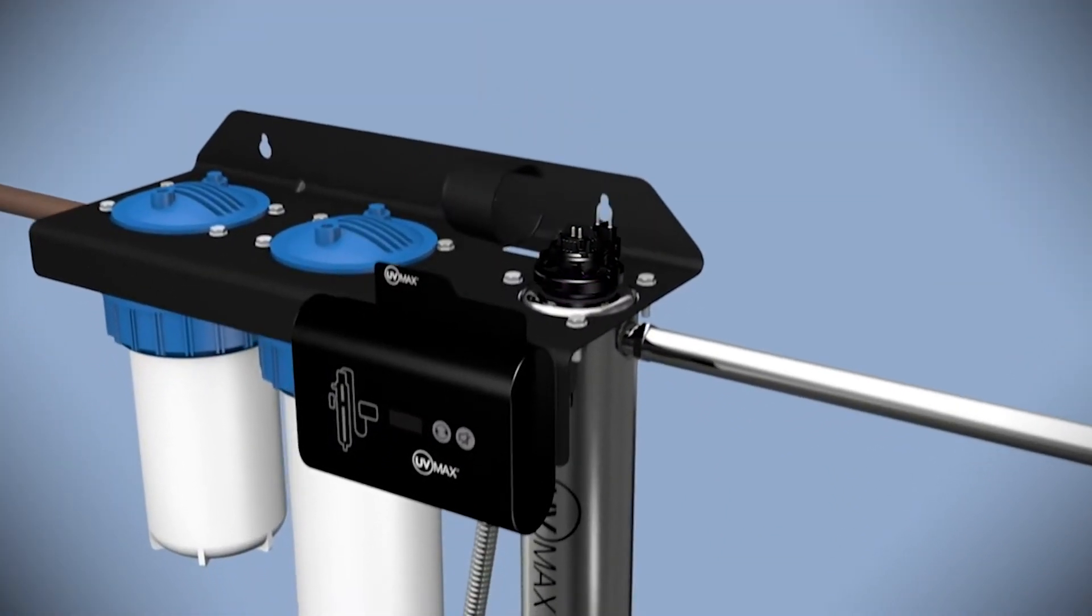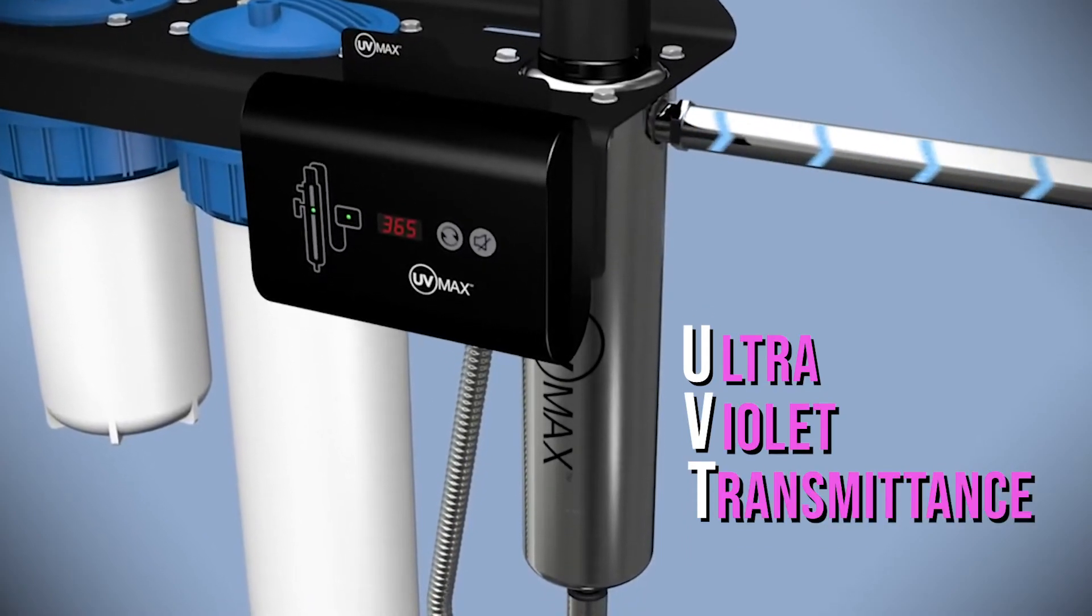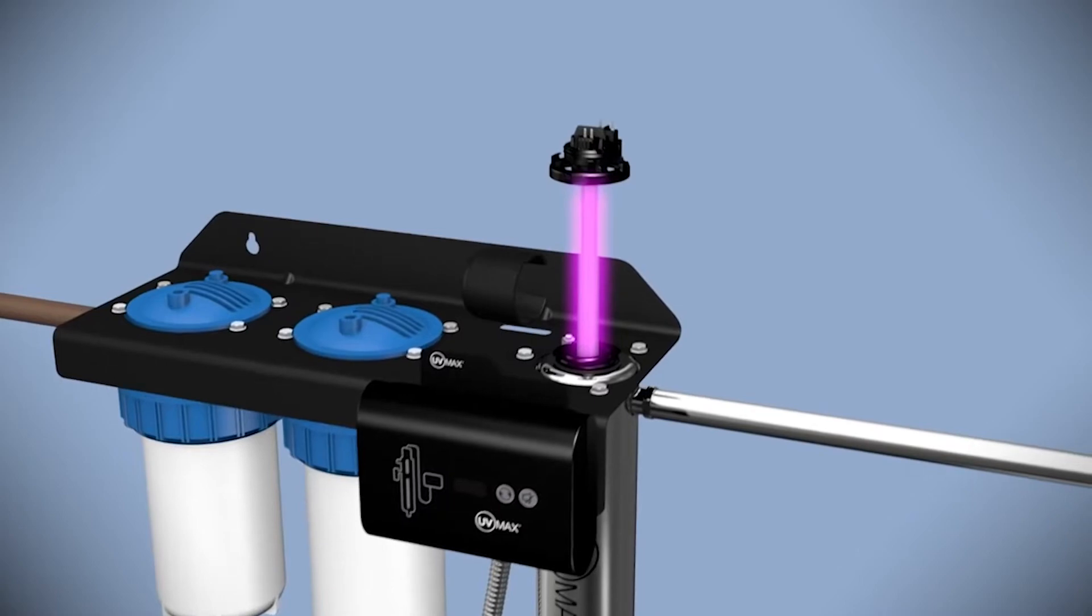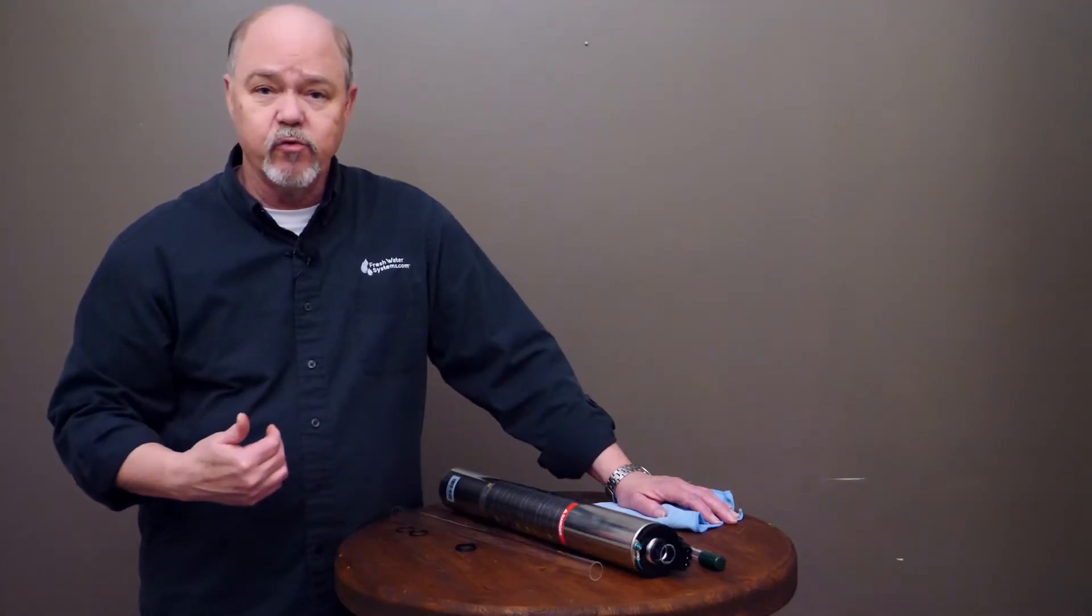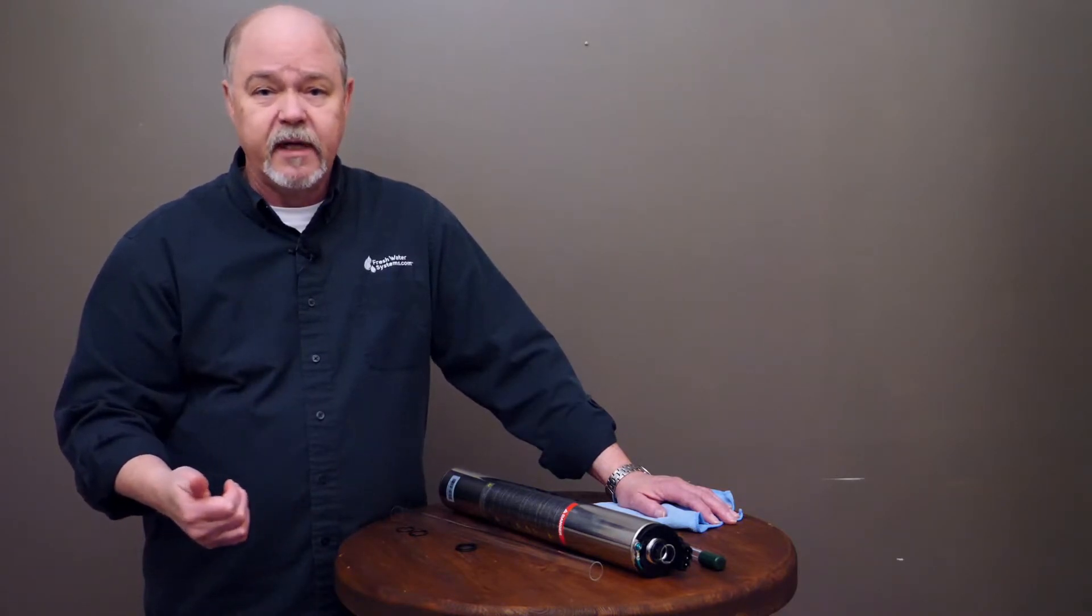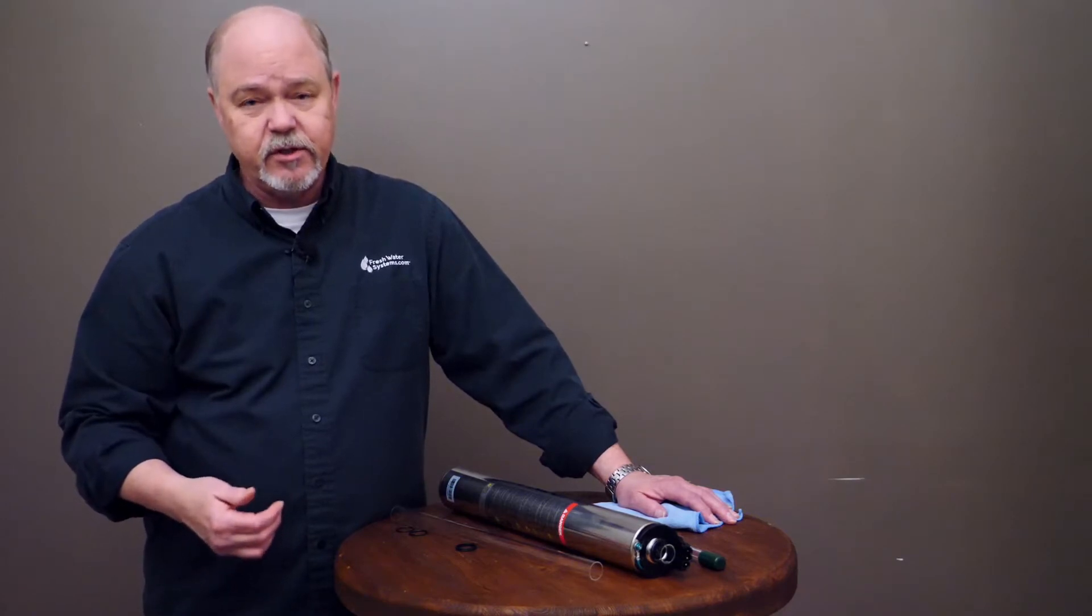Some systems come with a monitoring device that checks UVT, ultraviolet transmittance, and that's the intensity of that UV wavelength coming through the quartz glass and through the water. If your water is cloudy that UVT is going to be too low. If the quartz glass sleeve is dirty the UVT is going to be too low.